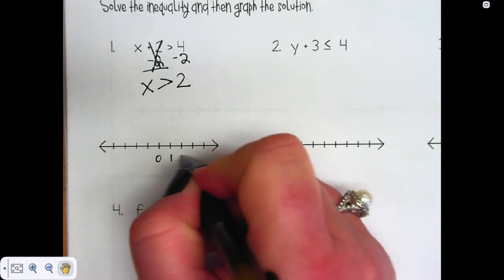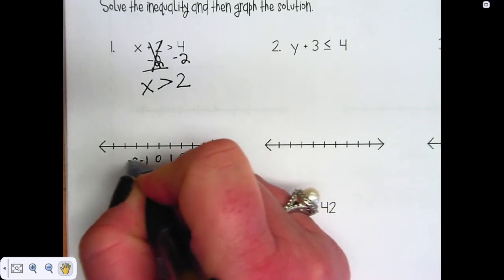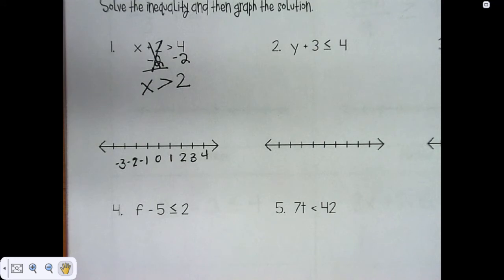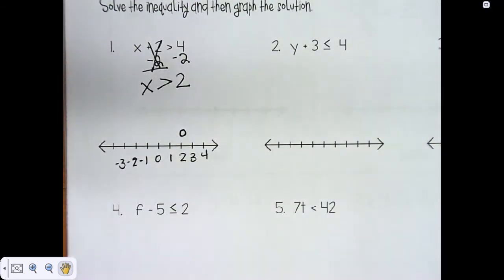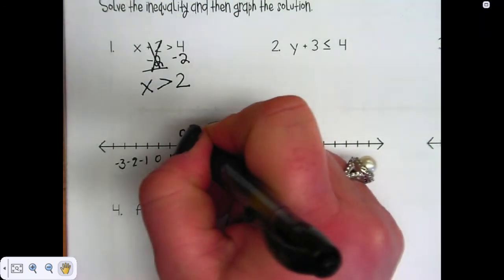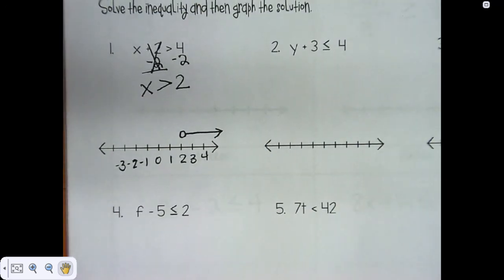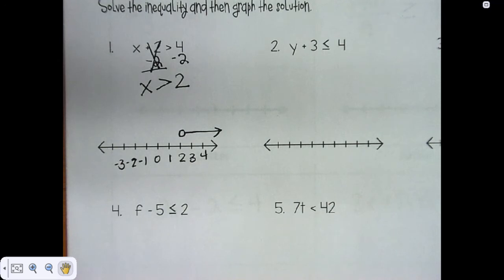First, I'm going to number my number line. X is greater than 2 — what kind of dot do you think I need? There is no or equal to; it only says greater than. So we need an open dot above the 2. Leave it open. And if x is greater than 2, then x can be anything past the 2 — it could be 2 and a half, it could be 3, it could be 3 and three-fourths — any number that falls on that number line past the 2.